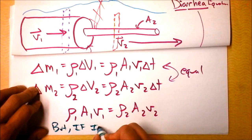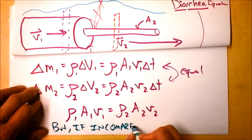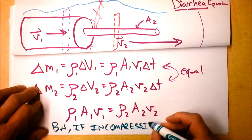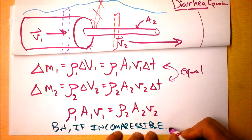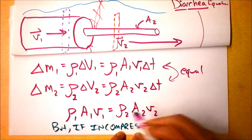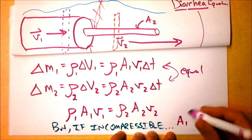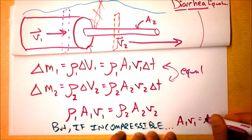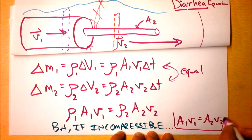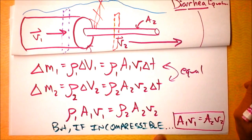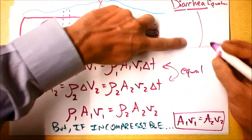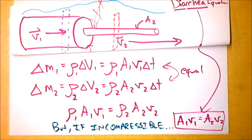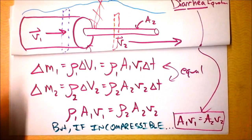We're going to very often consider incompressible fluids. If incompressible, that means you can't squish it — you can squeeze it, which increases the pressure, but you can't squish it in a way that changes the density. So if it's incompressible, the density cancels, and we get: area 1 times speed 1 equals area 2 times speed 2. This is the continuity equation for an incompressible fluid — the statement that no fluid is building up.